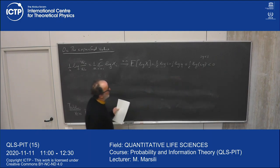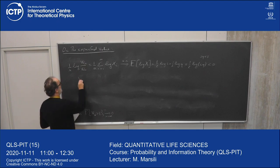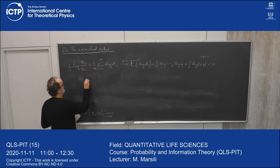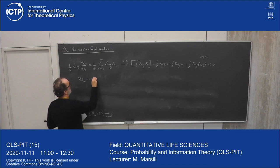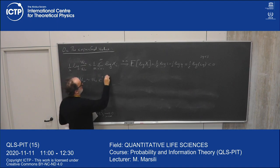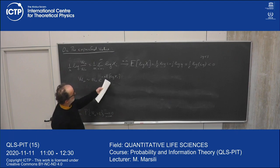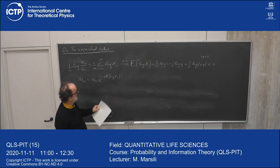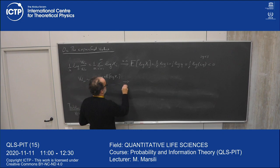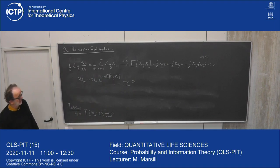So almost surely W_N is asymptotically equal to W0 times e^(N times E[log X_i]). Because E[log X] is negative, this goes to zero exponentially fast, which gives essentially the bankruptcy result.